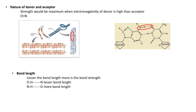The next factor is the nature of donor and acceptor. The strength is maximum when the electronegativity of the donor is high relative to the acceptor. If the donor is an oxygen atom and the acceptor is a nitrogen atom, the bond will be stronger compared to when the donor is a nitrogen atom. However, in biological systems, it is mostly the nitrogen atom that donates hydrogen and the oxygen atom that accepts it — as seen in protein structure and nucleotide structure. Regarding bond length: if the bond length is lesser, the bond strength will be more. When hydrogen is donated by oxygen, it has lesser bond length and is therefore more stable compared to when donated by nitrogen.